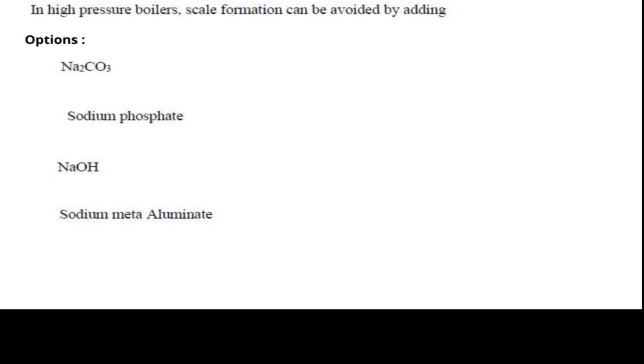In high pressure boilers, scale formation can be avoided by adding Na2CO3, sodium phosphate, NaOH, sodium meta-aluminate. And the answer is sodium phosphate. When we add sodium phosphate, then the scale formation on high pressure boilers will be avoided. So option two is correct.